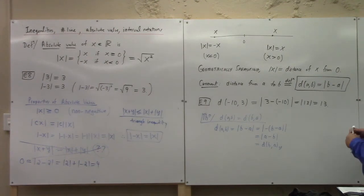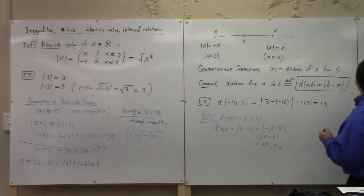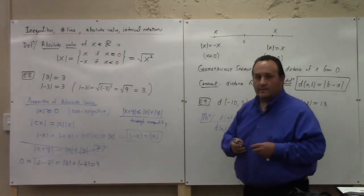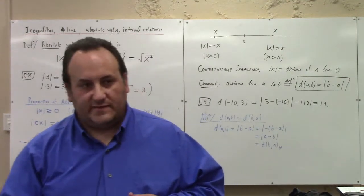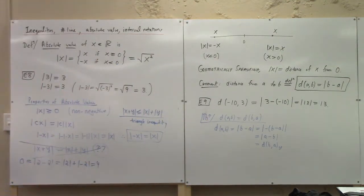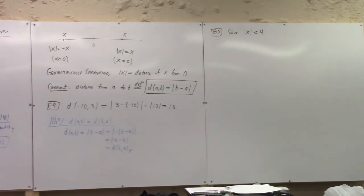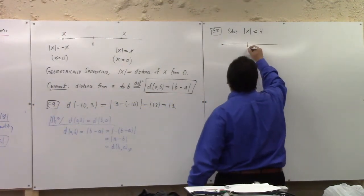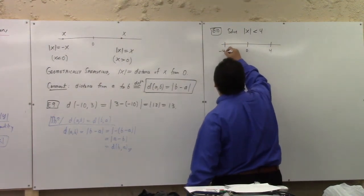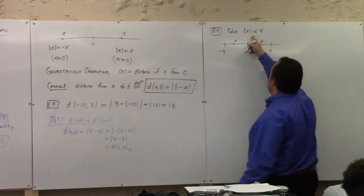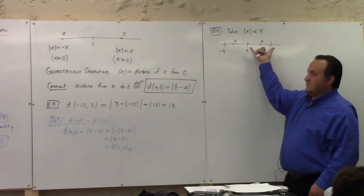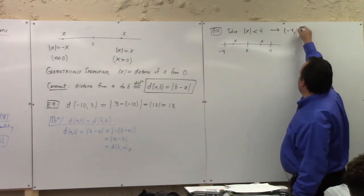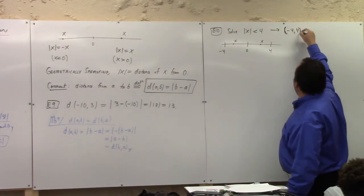So, one last example here. If you wanted to solve the absolute value of x is less than 4, how would you do that? What is that? Geometrically, what we're saying is that the distance from the origin to x is at most what? At most 4, right? So, you can picture this. Here's the origin. Here's 4. Here's minus 4. X has got to be somewhere in there, right? Because if you're at most 4 units from the origin, you can go at most 4 units to the right or 4 units to the left. So, the solution to this is minus 4 to 4. Not included.